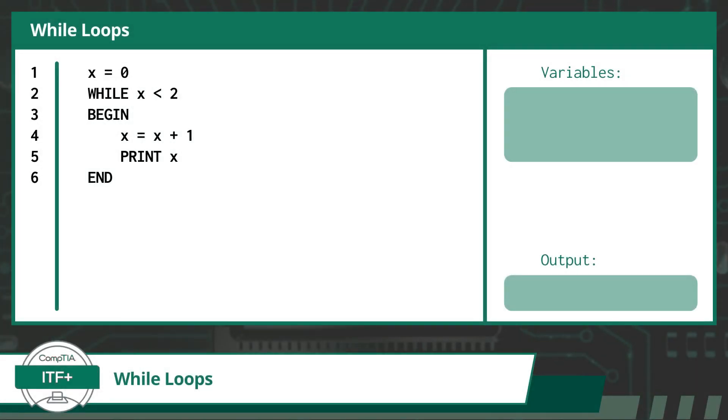Now that we got the flow of things, let's take a look at a while loop using some pseudocode and walk through the code line by line. For our pseudocode example, we will keep things very simple.